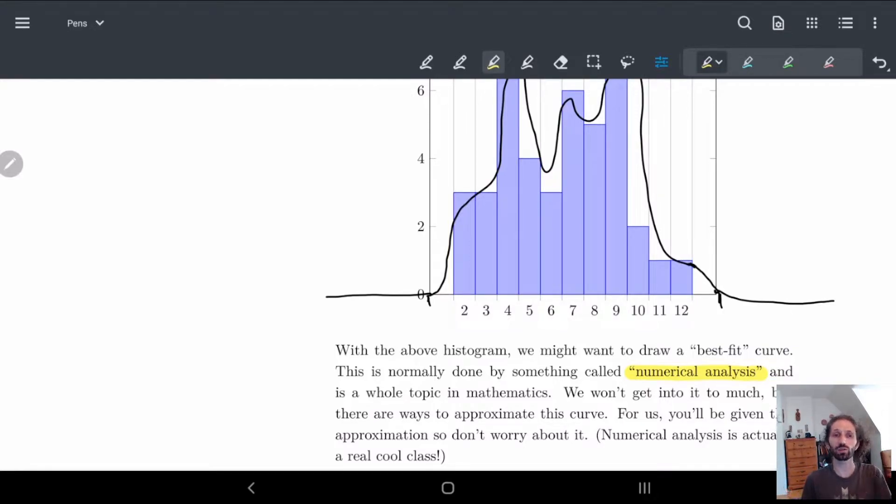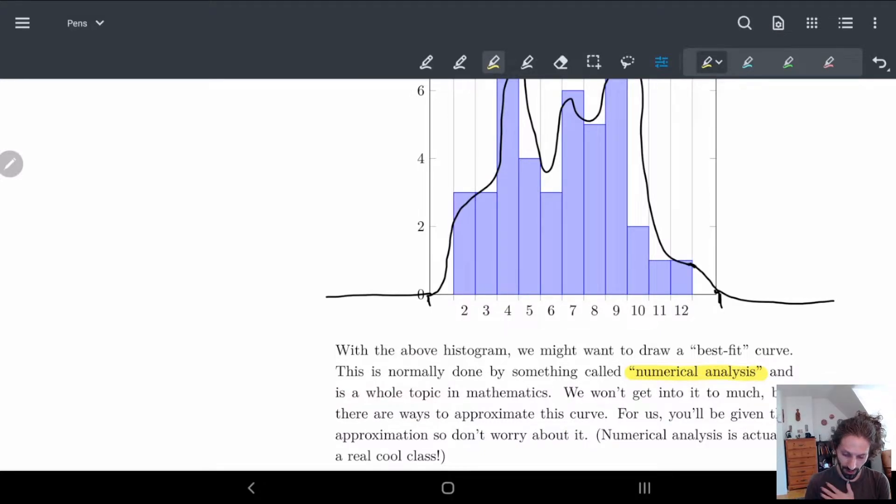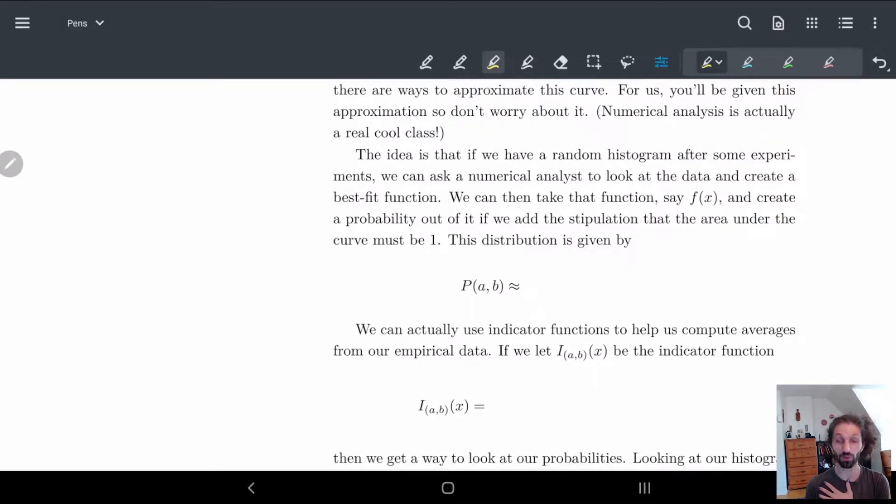So basically what you do is you take a histogram. If you haven't taken a numerical analysis class you go to a friend who has and you say yo can you make a continuous function out of this data. They'll be like yeah I got you. And they'll come back with a function for you. The only thing you then have to stipulate or maybe tell them in advance is that PS I need the area under the curve to be 1. Remember, because we need that the area has to be 1 to get a distribution.